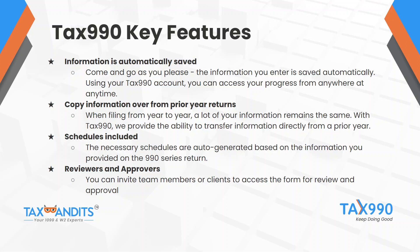Filing a 990 return can be a lengthy process, so when you file with Tax 990, you can come and go as you please and the information you enter is saved automatically. Since we offer a cloud-based program, you can access your account from anywhere at any time and pick up right where you left off. The organization information saves in the Tax 990 account, so when it comes time to file for that client each year, you can select the organization and the name, EIN, address, and principal officer information will auto-generate.